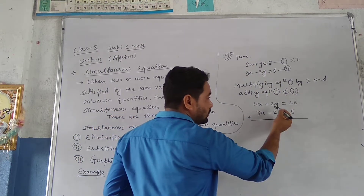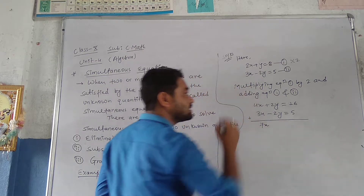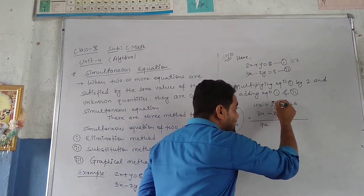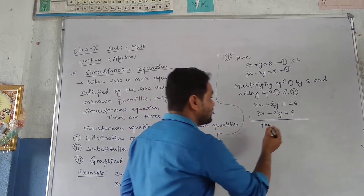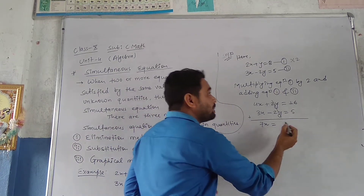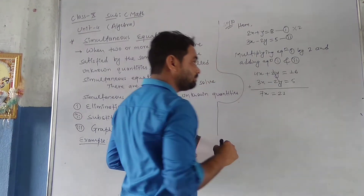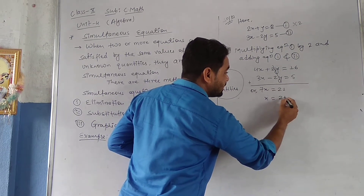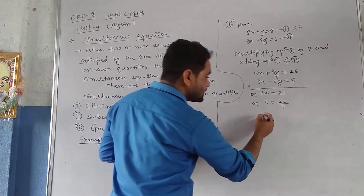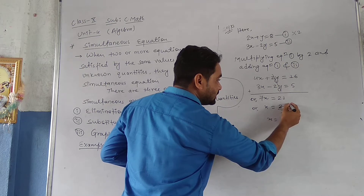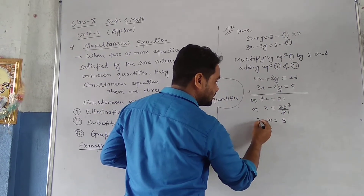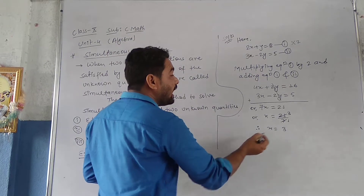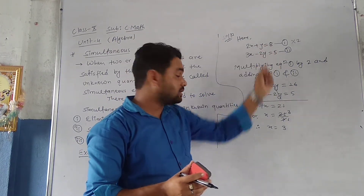Adding the equations: 4x plus 3x gives us 7x, and plus 2y minus 2y — the coefficients are the same and variables are the same, so we can cancel them, meaning we eliminate y. So we get 7x equals to 16 plus 5, which is 21. Now 7 is multiplied here, so dividing both sides by 7, x equals to 21 upon 7, which is 3. Therefore the value of x is 3.